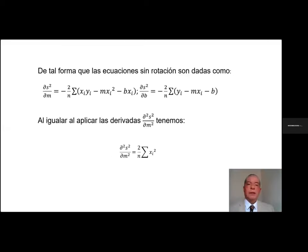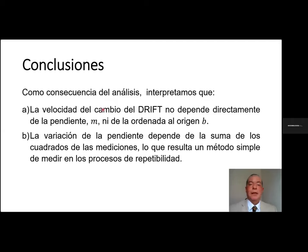Después de aplicar el método de mínimos cuadrados y analizar la variabilidad, observamos que el cambio con respecto a la variabilidad, tanto para la pendiente como para la ordenada, nos da nuevos resultados. En el caso de la pendiente, observamos que esta va a depender del número de datos y la suma de los valores en las mediciones. Podemos concluir que la velocidad del cambio del drift no depende directamente ni de la pendiente ni de la ordenada al origen a través de la transformación de las coordenadas. Lo que sí tiene variación depende de la suma de los cuadrados y de la cantidad de datos para el caso de la pendiente de la nueva variable encontrada.